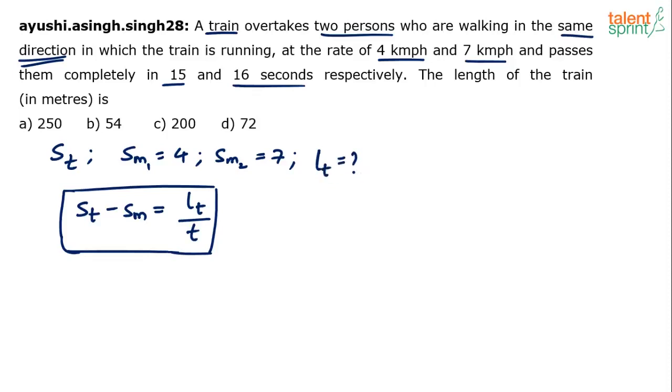Let's assume length of the train is Lt, and this is what we need to evaluate. So substitute in case 1: speed of the train St minus speed of the man is 4, equals to length of the train Lt by time taken is 15 seconds. And in case 2, we have speed of the train St minus speed of the man is 7, equals to length of the train Lt divided by time taken is 16 seconds.